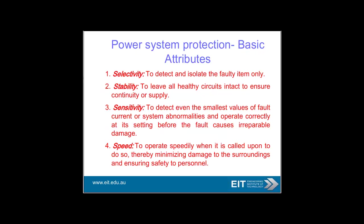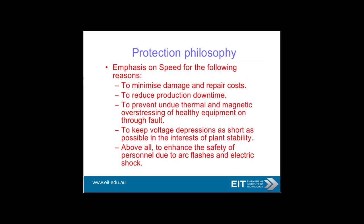Equipment comes secondary to people. Some of the attributes of a power system protection system: obviously selectivity — you want to select just the particular faulty part of the network and isolate that. Stability — try and keep your system continuously operating, especially in a very complex power system. Sensitivity — you want to operate with the smallest values of the fault, but you don't want to be overly sensitive and unnecessarily disrupt power. And finally, speed is critical — the quicker you operate when you decide action is needed, the better.